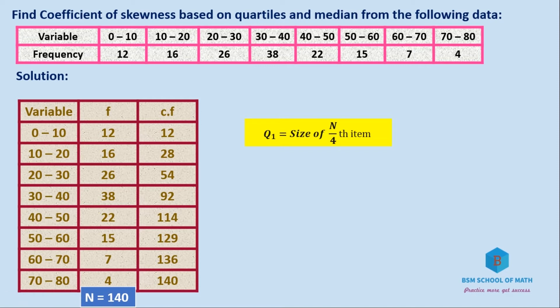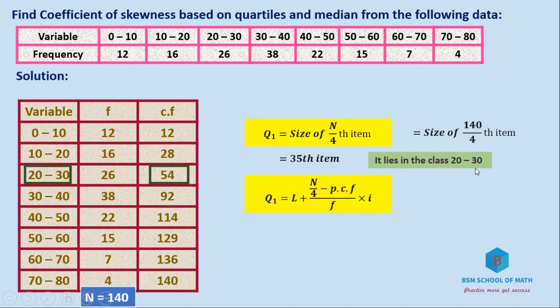Q1 is equal to the size of N/4 th item. N is 140, so 140/4 equals the 35th item. The 35th item or above is 54 in cumulative frequency. The corresponding class is 20 to 30. It lies in the class 20 to 30. The formula for Q1 is: Q1 = L + (N/4 - PCF)/F × i, where PCF is the preceding cumulative frequency of 28, and F is the frequency.